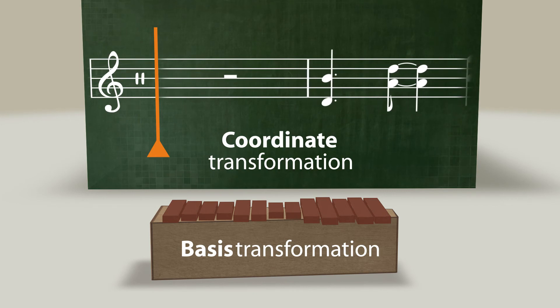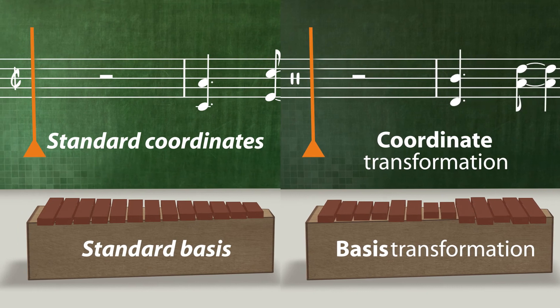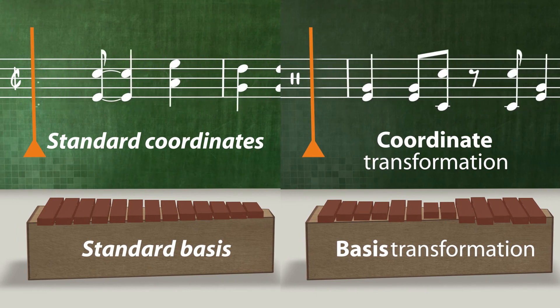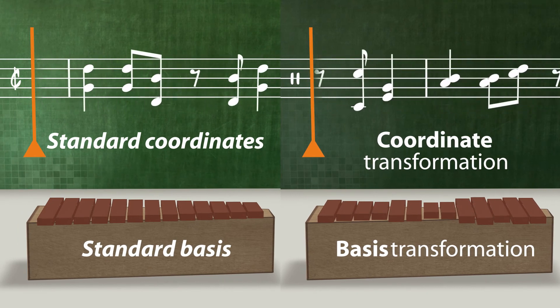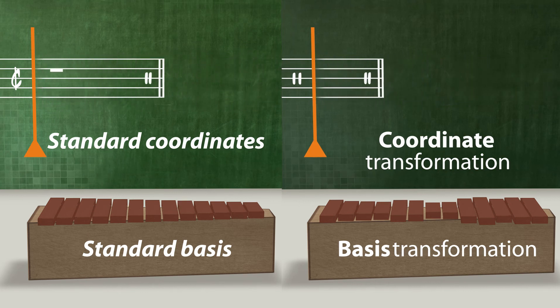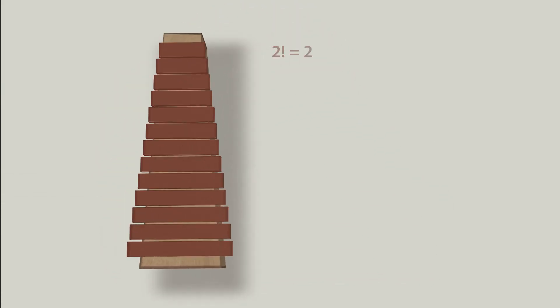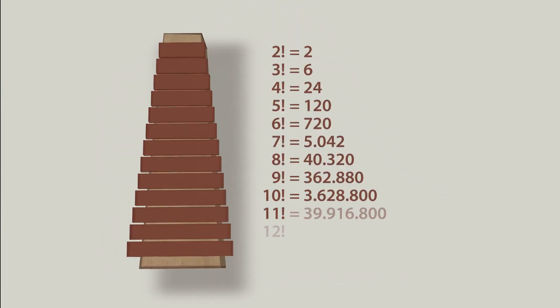When subjected to this sort of transformation, the music is rendered invariant, meaning that the permutations are the corresponding symmetry group. With 13 bars, we obtain over 6 billion possible permutations of the bass and coordinates. In the standard model of elementary particle physics, we will rediscover permutations as the core of all symmetry groups.